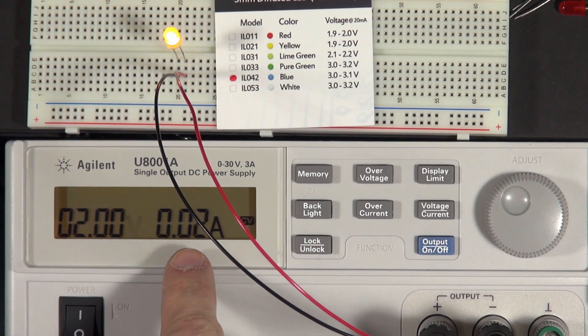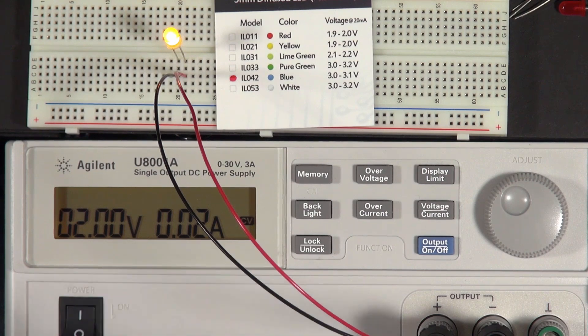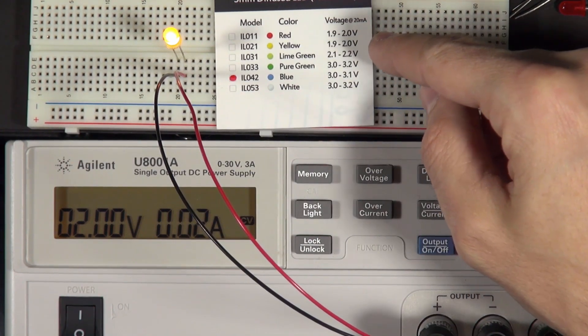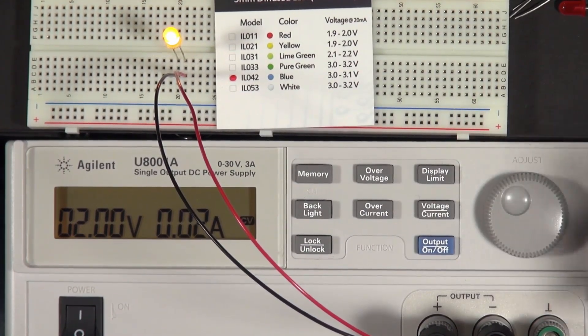And now you can see at 2 volts, the LED is drawing 0.02 amps, which is 20 milliamps, and so it's doing exactly what the manufacturer said it should do, which is great.